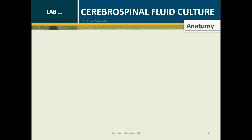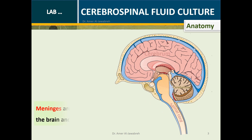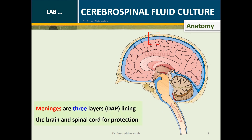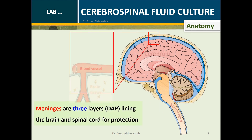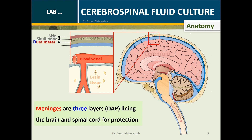Anatomy: Meninges are the three layers outlining the brain for protection — Dura Mater, Arachnoid, and Pia Mater.